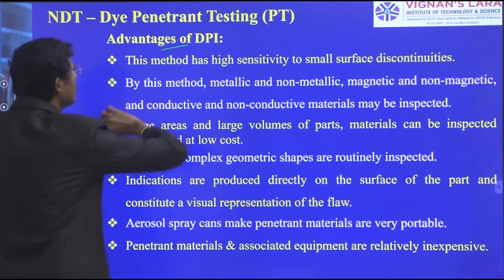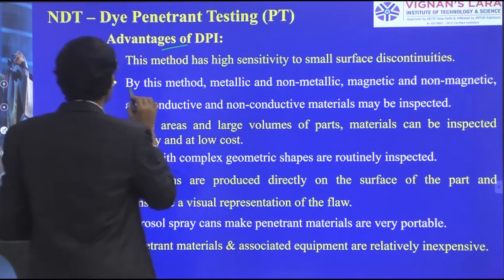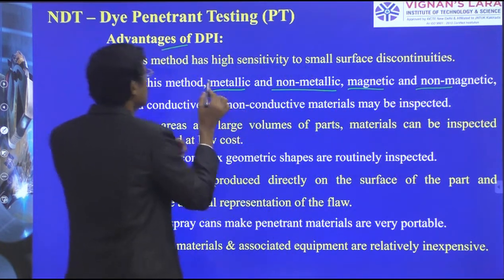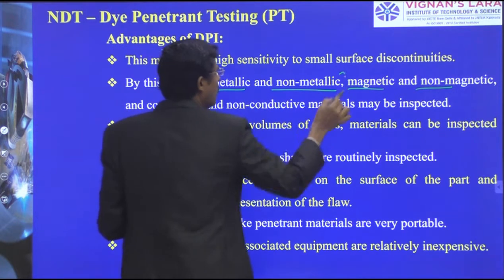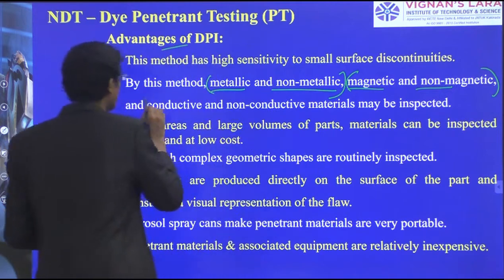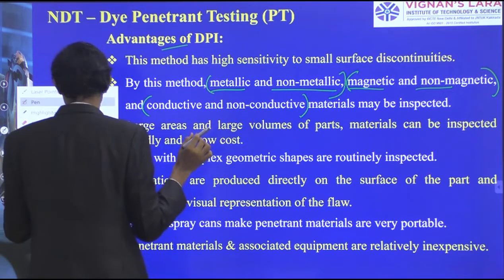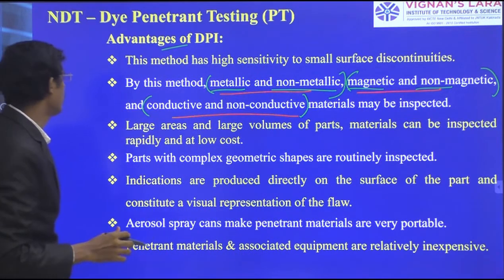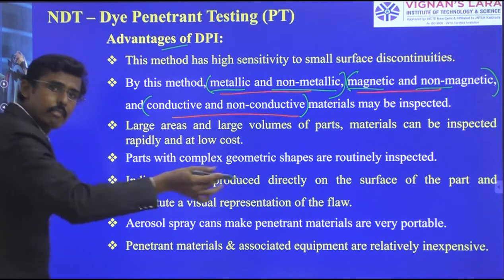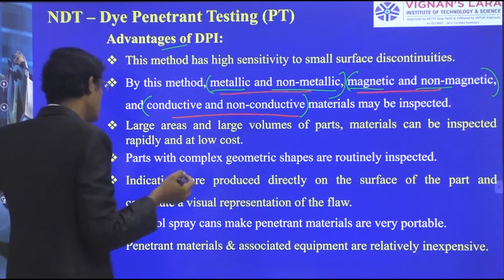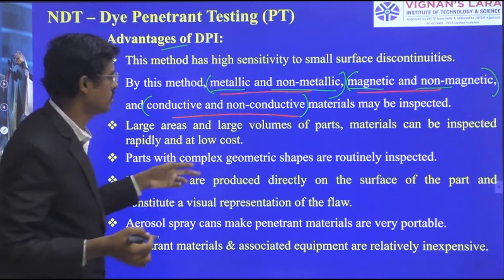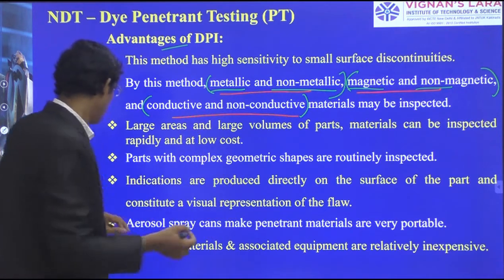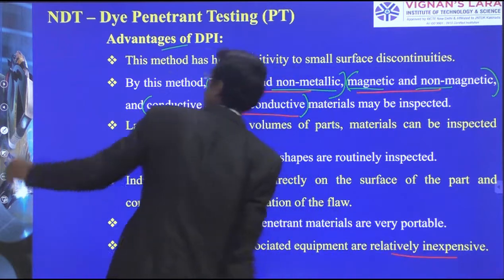Advantages: this method has high sensitivity to small surface discontinuities. Metallic or non-metallic, magnetic or non-magnetic, conductive or non-conductive — any material can be inspected. Large areas and large volumes of parts can be inspected rapidly. Parts with complex geometry shapes are routinely inspected. Indications are produced directly on the surface and are visually interpreted. Aerosol spray makes penetrant materials very portable. Penetrant materials and associated equipment are relatively inexpensive.